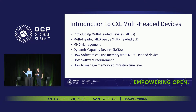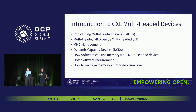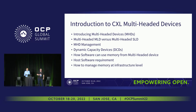Today we're going to talk about multi-headed devices — give a high-level introduction of what they are and what capabilities they provide. There are two different flavors: the multi-headed MLD, or multi-logical device, and the multi-headed SLD, single logical device. Once we've established those two flavors, we'll talk about what management looks like for an MHD. Then we'll talk about a capability set added in 3.0 that is very important to pooling devices like multi-headed devices: the dynamic capacity device capability framework. And finally, how you can use this kind of memory from a software point of view, what you need on your host operating system, and how to manage this memory at an infrastructure level.